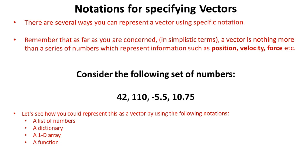There are several ways that we can represent a vector using specific notation. Remember that as far as you're concerned, and in very simplistic terms, a vector is nothing more than a series of numbers which represent information such as position, velocity, and force. So, consider the following set of numbers. Let's see how you could represent this as a vector by using various notations.